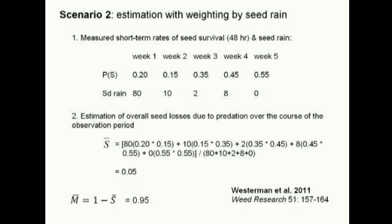In the second scenario, we have the same predation rates, but seed rain is very heterogeneous during the predation intervals, resulting in uneven overlap between seed rain and predator activity. Now we have data on both predation rates and seed rain. In step two, the product of the predation rates for weeks j and j+1 are multiplied by the seed rain for cohort j. The denominator of S-bar is the sum of seed rain for the five predation cohorts. Survival is much lower in this example: most of the seed rain occurred in week one when survival was quite low (0.20), and less occurred during later weeks when survival was higher. Only 5% of seeds survived predation during the longer interval, giving M-bar of 0.95 — meaning 95% of seeds were eaten. For cases of uneven temporal overlap between seed rain and seed predation, see Westermann et al., 2011.